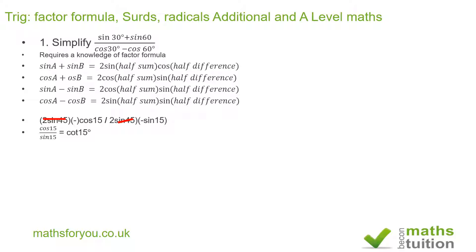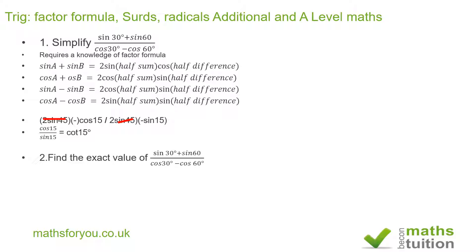That's the first part. The second question says: find the exact value of sine 30 plus sine 60, divided by cos 30 minus cos 60. This is intended to confirm the result we just obtained.